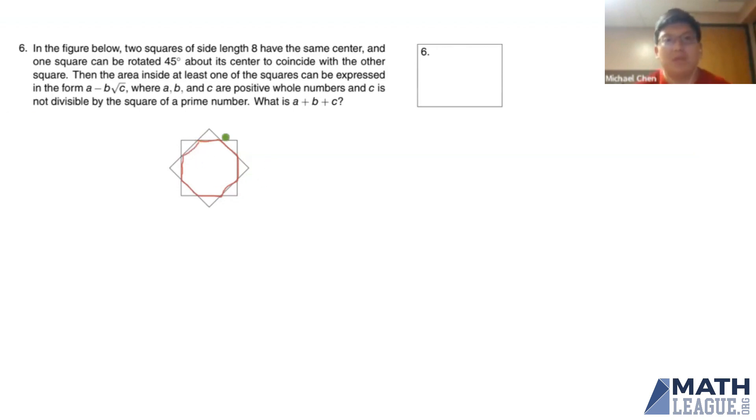So there we have that octagon, and we can see that the rest of the figure, the rest of the area covered by one or either of the squares is these eight isosceles triangles right here: two, three, four, five, six, seven, and eight.